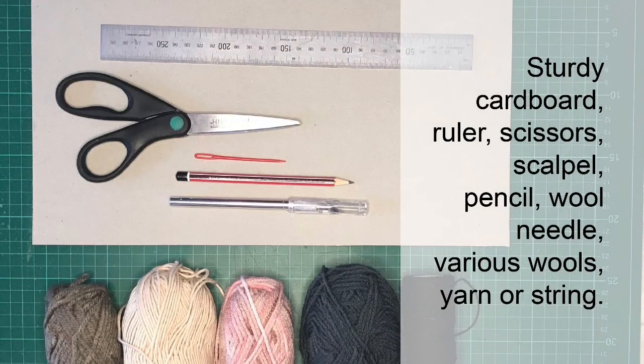To make a cuff bracelet, what you'll need is sturdy cardboard, a ruler, scissors, scalpel, pencil, a wool needle, and various wools, yarn or string.